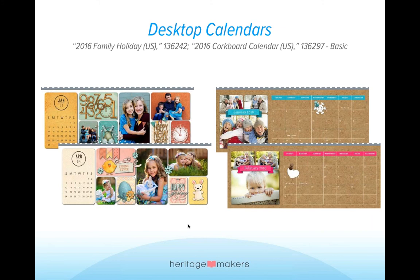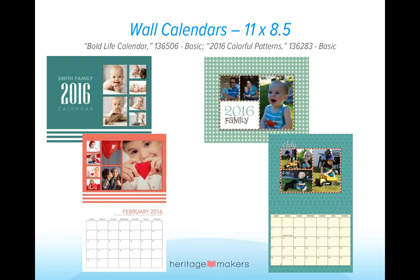Here are two more desktop calendars. On the left is the Family Holiday one — it takes the same components we saw on the 11 by 16 calendar and made it into a desktop version. The cover looks very similar, and you can see the different artwork month to month. On the right-hand side is a corkboard calendar — quite popular, a basic design with a corkboard background and spots for three photos with the month. It has cute little pushpins so it looks like you're really using a corkboard.